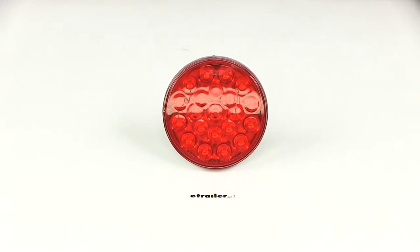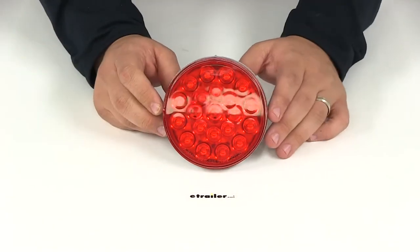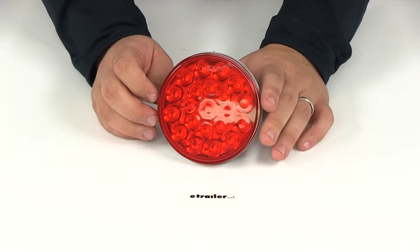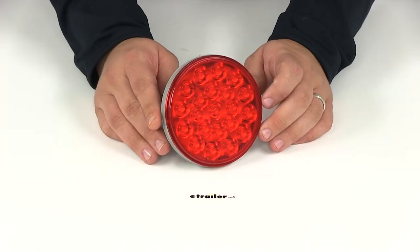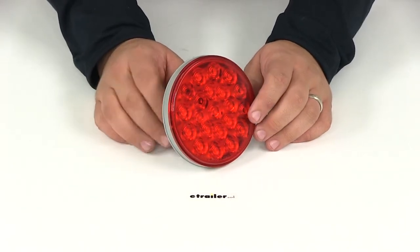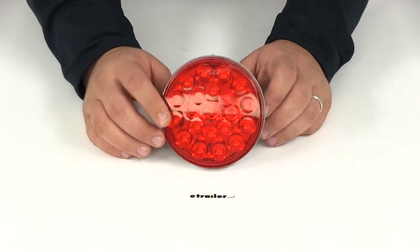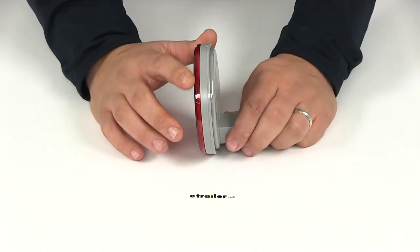Today we'll be reviewing part number STL-55RB. This is a sealed 4-inch round red LED light from Optronics. The red 4-inch round stop, turn signal, and tail light is a great replacement for incandescent lights. You don't have to worry about replacing bulbs or brittle filaments. It features a sealed housing and lens unit.